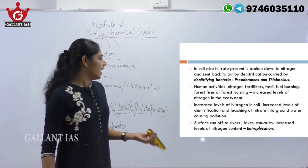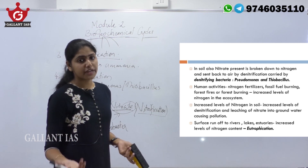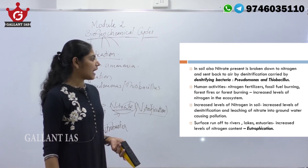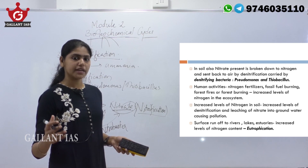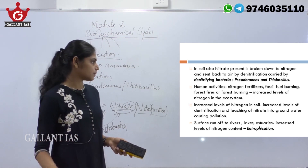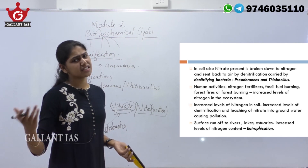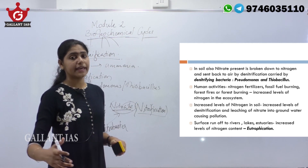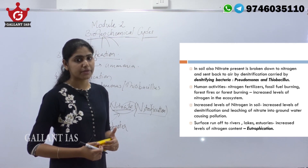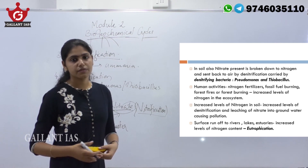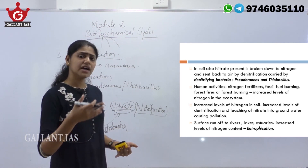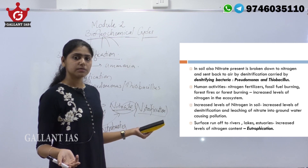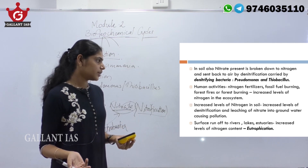Human activities like excessive use of nitrogen fertilizers, fossil fuel burning, and forest fires have increased the level of nitrogen in the atmosphere and ecosystem. The increased nitrogen in soil through excessive fertilizer use can reach water sources like oceans and lakes through surface runoff, causing a process known as eutrophication.